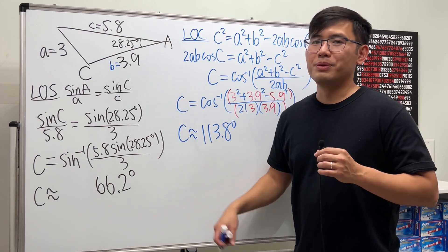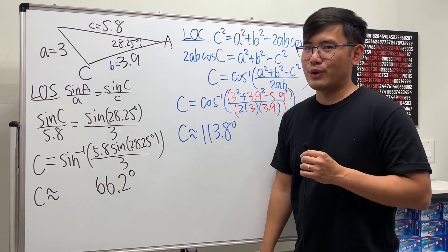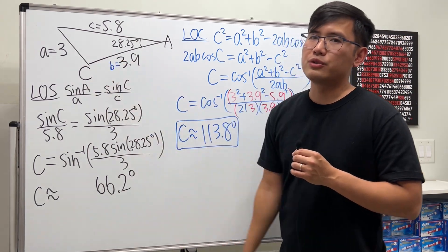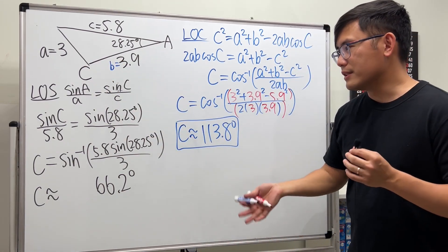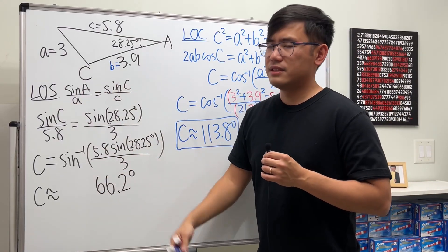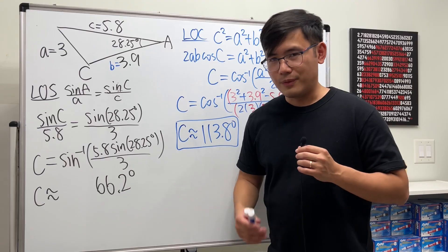So now, which one do you believe? Of course, this one, right? Angle c is 113.8 degrees, and you can see that much better from the picture here. So now the question is, what's going on? How come the law of sine didn't give us the correct answer? Well, I'll tell you.